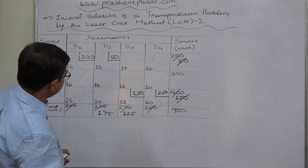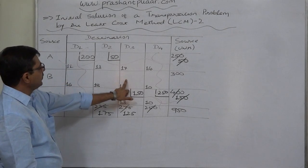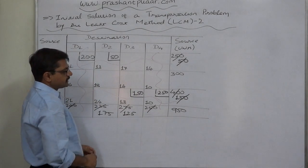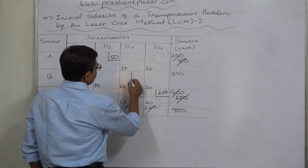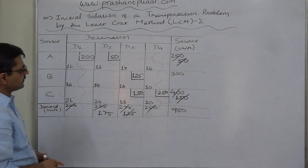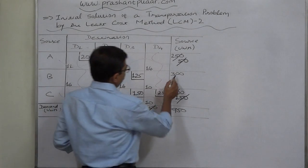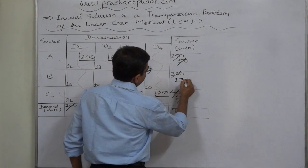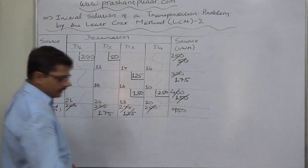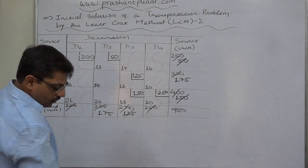Now there are only two cells remaining. Applying the least cost rule, cell B-D3 has the least cost of 14. Allocation: demand 125, supply 300 — lower is 125. We allocate 125 units to this cell; demand of D3 is fully satisfied. Source B had supply of 300, of which 125 is now allocated, leaving a remaining supply of 175. We cancel column D3.